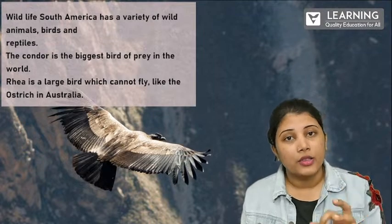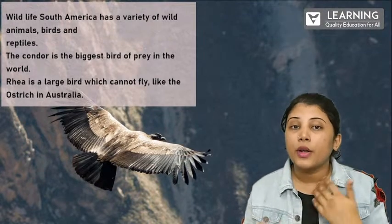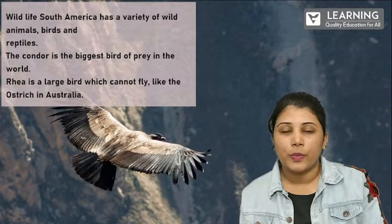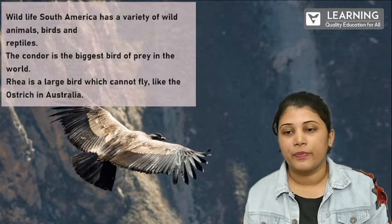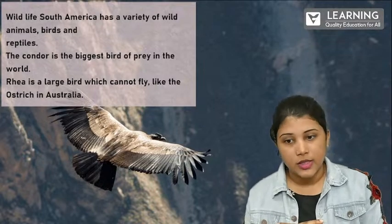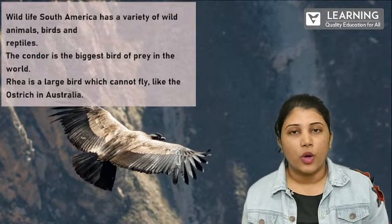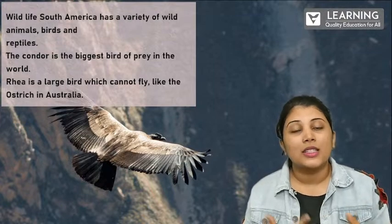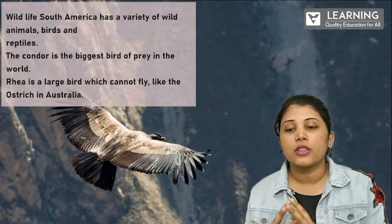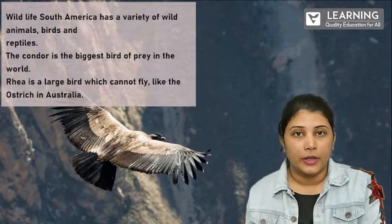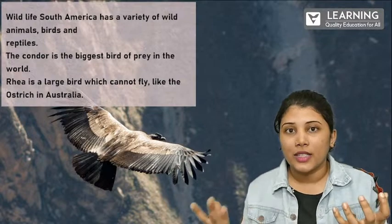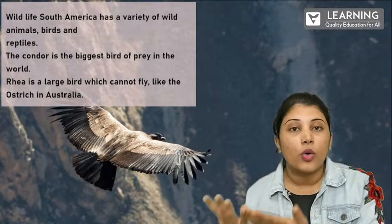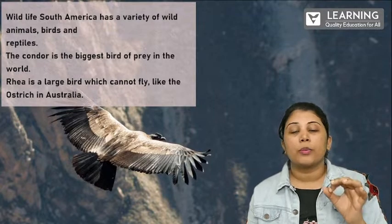Because of being in the forest, you will see many animals living in that region — very peculiar types of animals. South America has a variety of animals, birds, and reptiles. Because of the Amazon jungle and Amazon River, lots of huge species of animals can be found in this area. The Condor is the biggest bird of prey in the world. It looks like a vulture — its feathers are really huge. The Condor is the biggest bird of prey; it hunts its food.